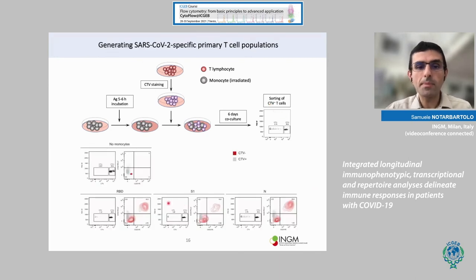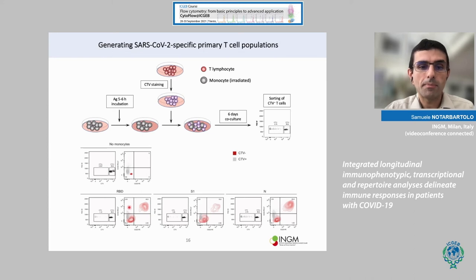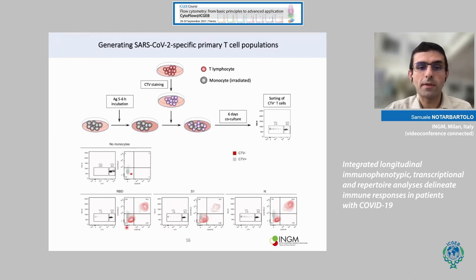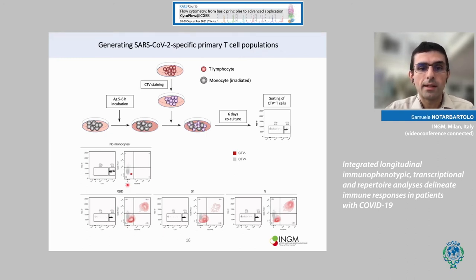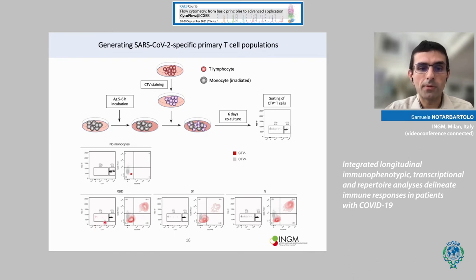At the same time, after the co-culture we co-stained T cells with activation-induced markers — molecules upregulated on the surface of T cells upon activation, like CD25 and ICOS. As you can see, there is a strong upregulation of these markers compared to the negative control, and also an increase in the frequency of Cell Trace Violet-negative cells.